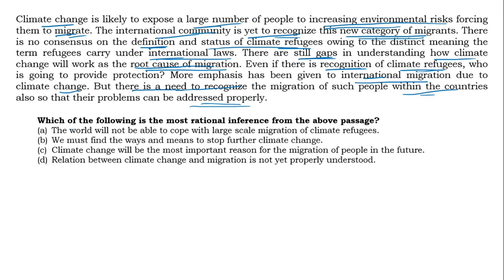Let us read the statements. We need to choose the main theme of the passage. Statement 1: 'The world will not be able to cope with large-scale migration of climate refugees.' This is an extreme negative statement — most of the time such statements are wrong, and for this passage it is not correct. Statement 2: 'We must find ways and means to stop further climate change.' It looks like the right answer, but this is not the main theme — the author is speaking specifically about climate refugees and migration caused by climate change.